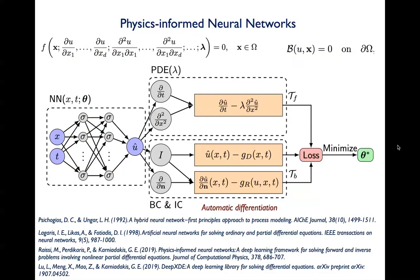We define a multitask learning problem where we train the neural network to achieve different objectives simultaneously: fit any available data, minimize the residual of the PDE, and match boundary or initial conditions. This dates back to the 90s, but the catch back then was that people had to manually derive those gradient computations. For more complex equations requiring complex differentiation, this quickly became very tedious. What happened a few years ago is that we started using automatic differentiation, realizing this whole computation defines a computational graph where we can use chain rule to compute all gradients.